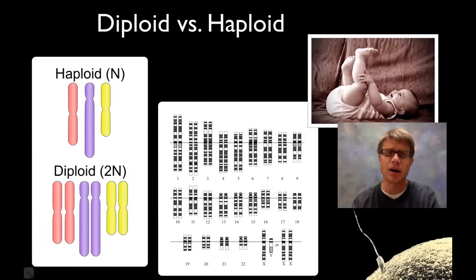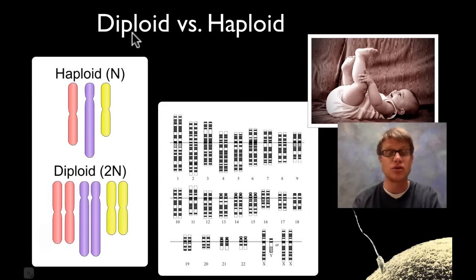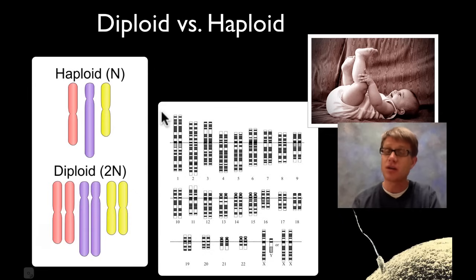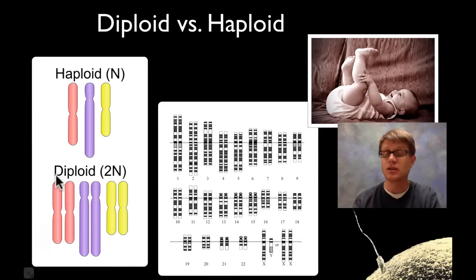Before we talk too much about meiosis, we should get this out of the way: what is diploid and what is haploid? Diploid essentially means you have two complete sets of every gene, or two complete sets of chromosomes. In humans we have 46 chromosomes — that means we have 23 pairs. You can see here a karyotype: if it's a male it would be 1X and 1Y chromosome; if it's a female it would have 2X chromosomes. You have 2 copies of chromosome 1, 2 copies of chromosome 2, 2 copies of chromosome 3, and so on. Our sperm and egg would be haploid — they'd have one set of all the chromosomes — and all the other somatic cells in our body are diploid.